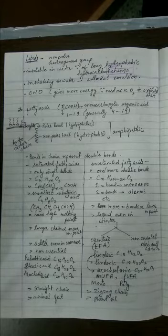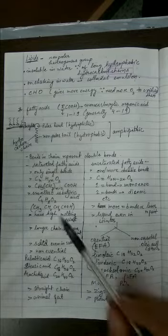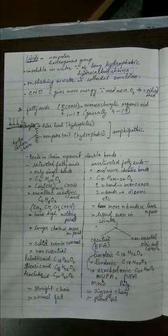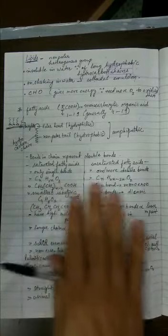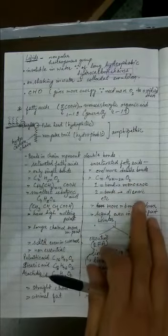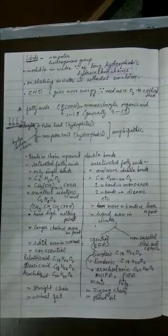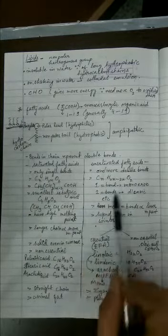That's why it is called as amphipathic in nature. We learned that there are two types of fatty acids: saturated and unsaturated. I told you that single bonds are here, one or more double bonds are here. Accordingly, the names are given as monounsaturated or diunsaturated, etc. Then I told you the formula how to understand the whole concept.